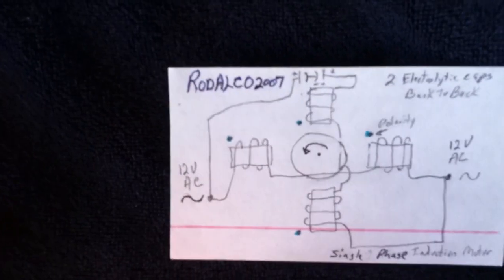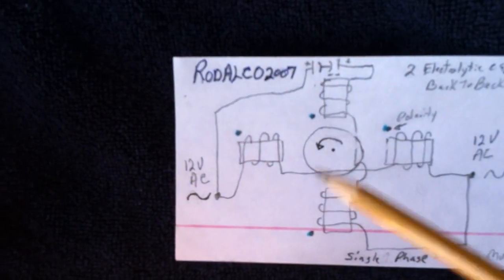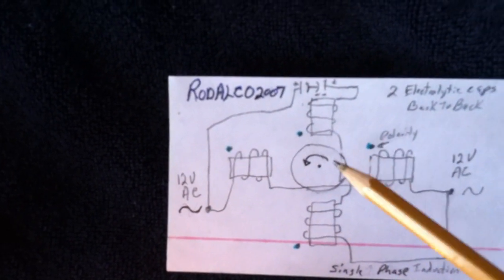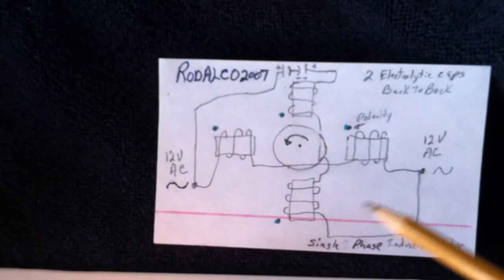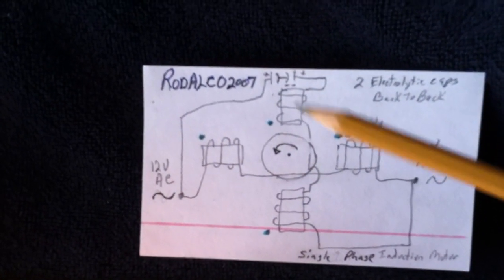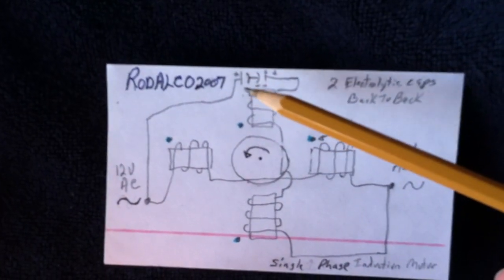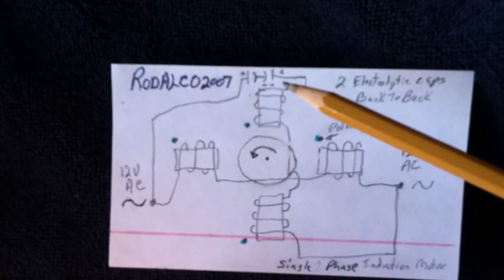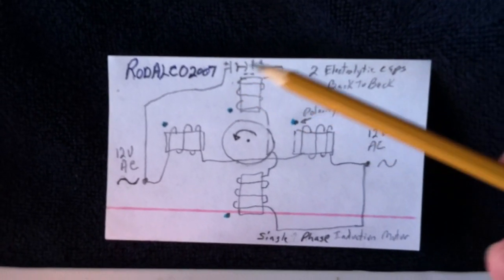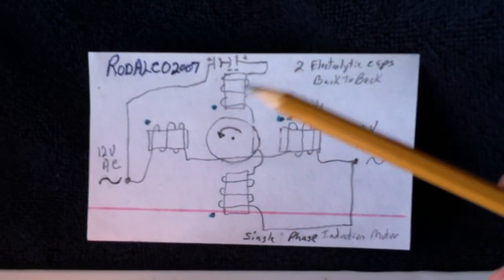But this gentleman here took it one step further. He used a regular induction motor rotor and made it more precise. But he had this great diagram here that I followed. His idea of using the two electrolytics back to back got me going on this. I was stalled until I learned about it. I couldn't find an AC cap to make it work.